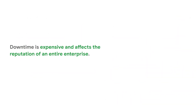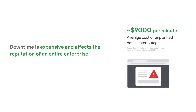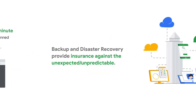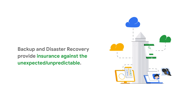Now, more than ever, significant infrastructure downtime can have a devastating impact on an enterprise business. As shown here, analysts have estimated the average cost of data center outages around $9,000 a minute — that's $13 million per day. A potentially huge impact. And the impact isn't just monetary. In many cases, the impact to a business's reputation can be even more catastrophic and take longer to recover from, if ever.